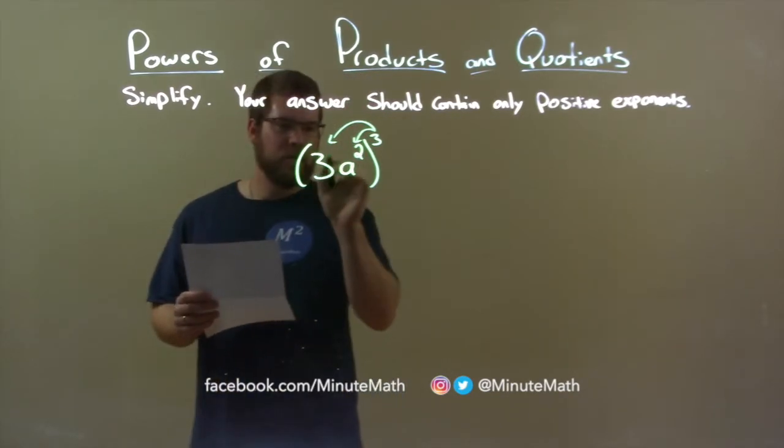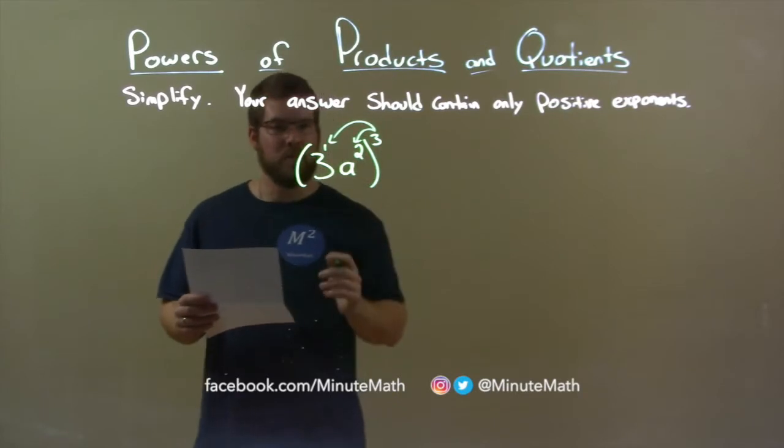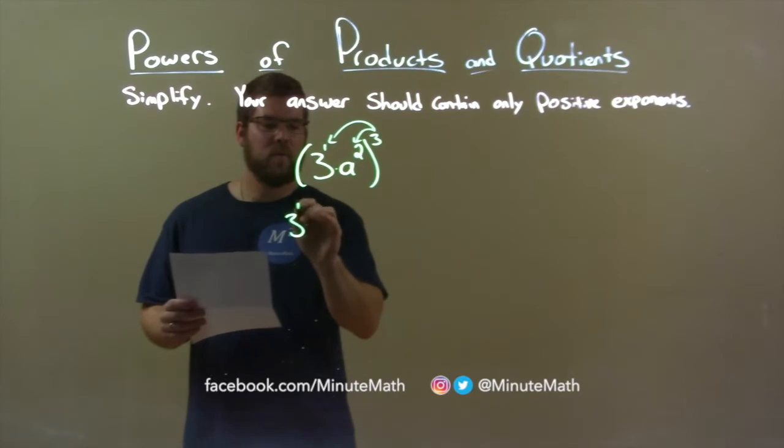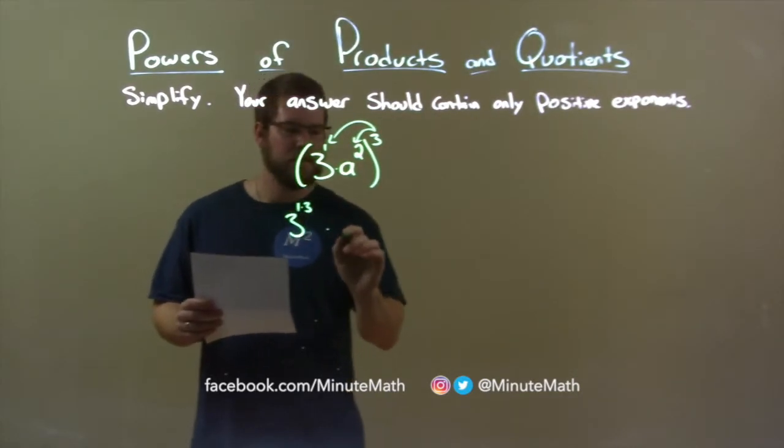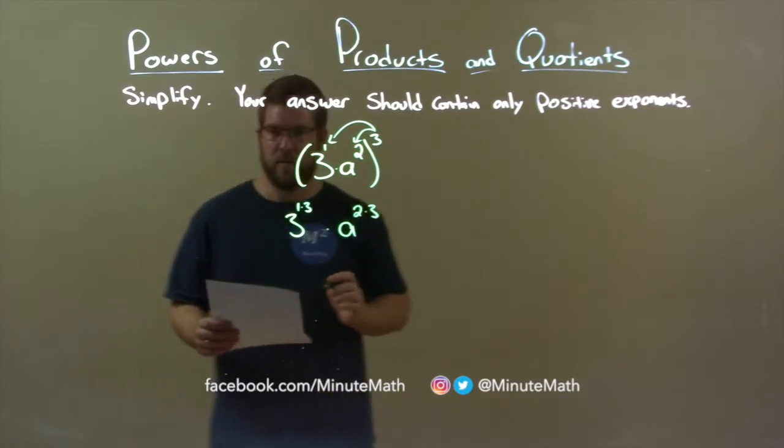So the exponent right here for three is really three to the first power. So when we do that, distribute it in there, because these are separated by multiplication, we have three to the one times three power times a to the two times three power.